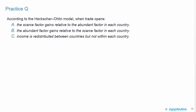The last practice question for this LOS: According to the Heckscher-Ohlin model, when trade opens: A, the scarce factor gains relative to the abundant factor in each country; B, the abundant factor gains relative to the scarce factor in each country; or C, income is redistributed between countries but not within each country.